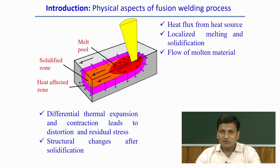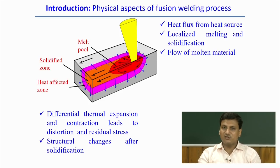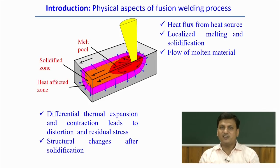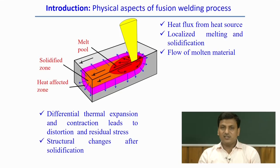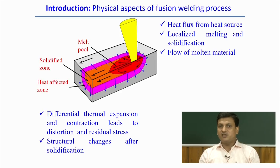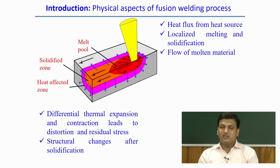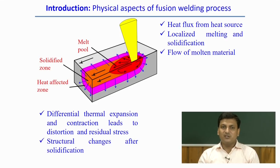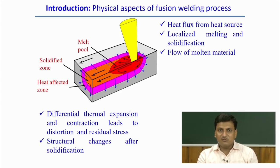This is the typical characteristic. From a physical aspect point of view, there is application of heat flux from the heat source, localized melting and solidification, and flow of molten material within the molten pool. The variation of temperature distributions brings differential thermal expansion and contraction, which leads to the formation of residual stress and distortion in the weld structure. Structural changes also arise from solidification behavior in the weld structure.